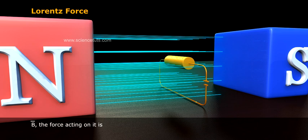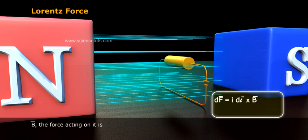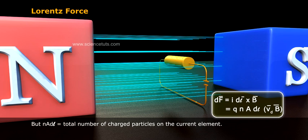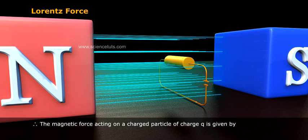When this conductor is placed in a magnetic field of intensity B, the force acting on it is dF equals I dL cross B equals q n A dL v_d cross B. But n A dL stands for total number of charged particles on the current element.